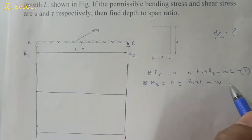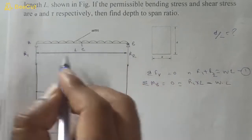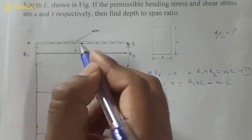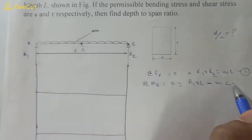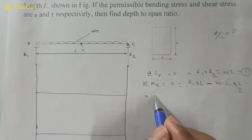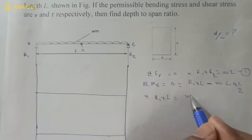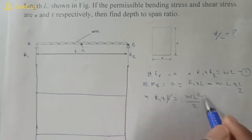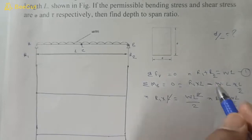The total load is w·l and its center of mass is at midpoint C, so the distance is l/2. Therefore R1 into l equals w·l² by 2, giving R1 equals w·l by 2.